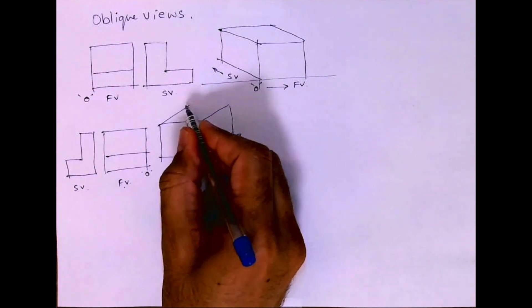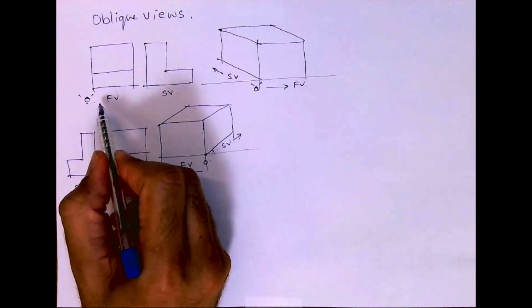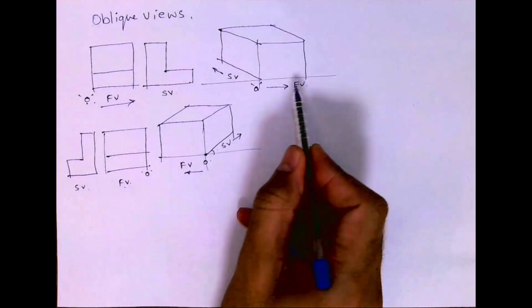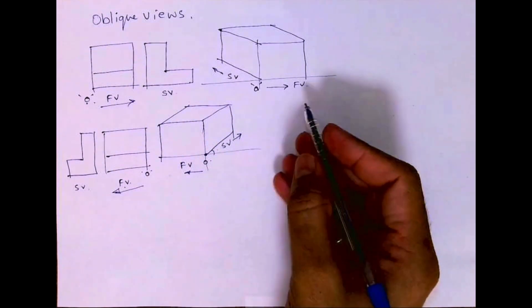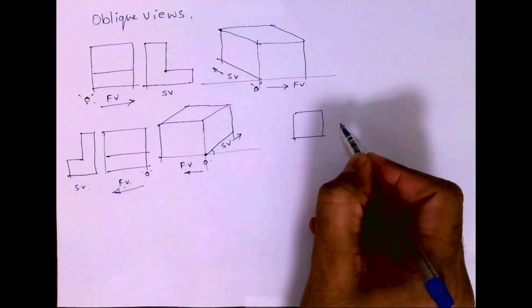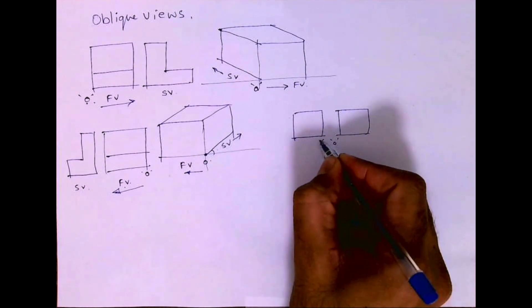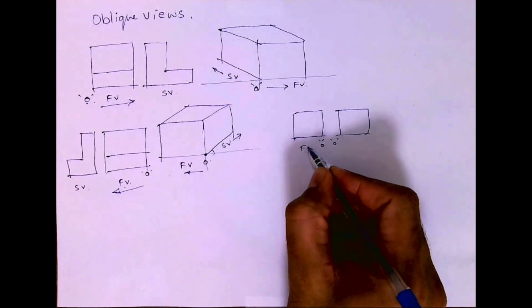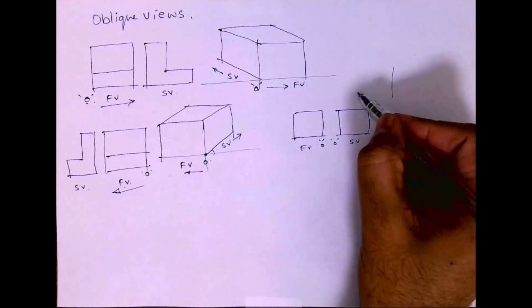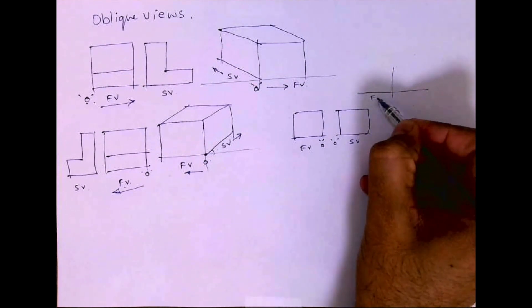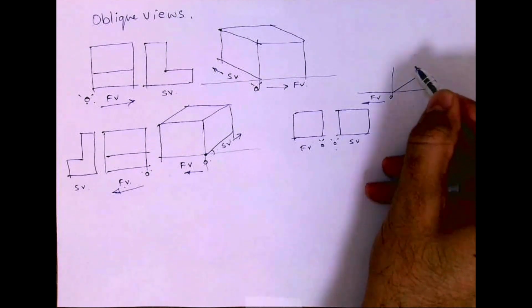This is a basic concept to keep in mind: if the origin is here, the front view will go towards the right; if the origin is over here, the front view will go towards the left. Now, if you have an origin like this, the front view is on the left side and the side view will come on the right side.